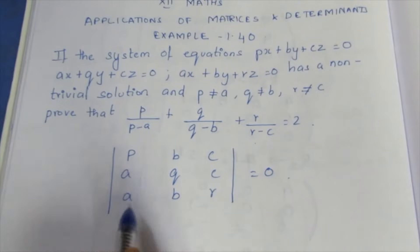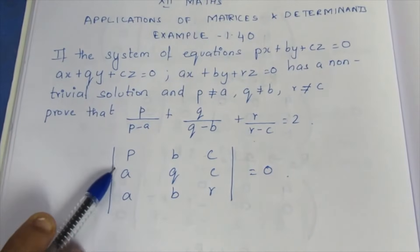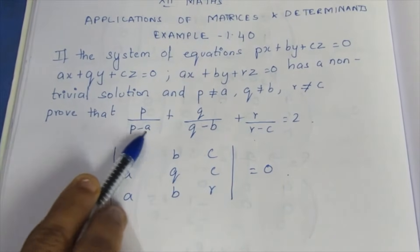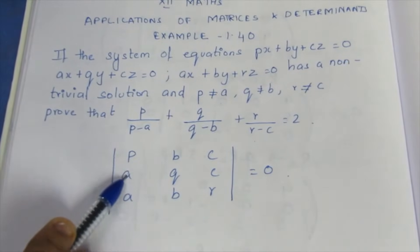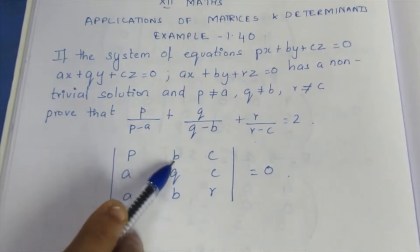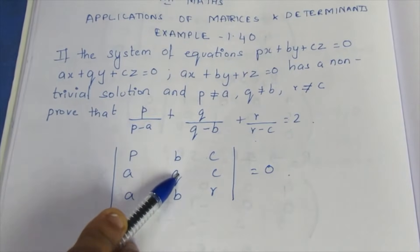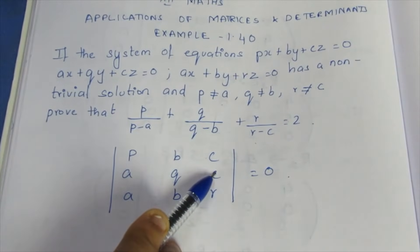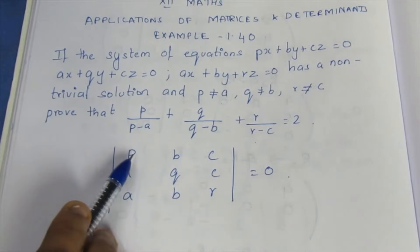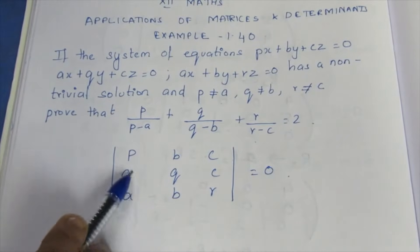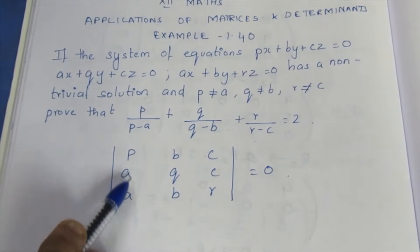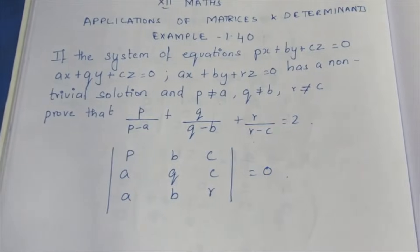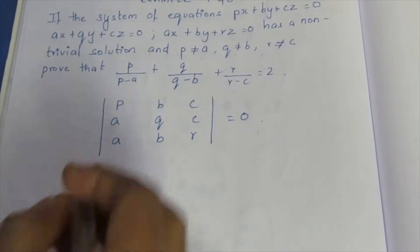Now we perform row operations. We apply R2 minus R1 and R3 minus R1, giving us entries like P-A, B-Q, C-C in the modified rows, simplifying the determinant step by step.